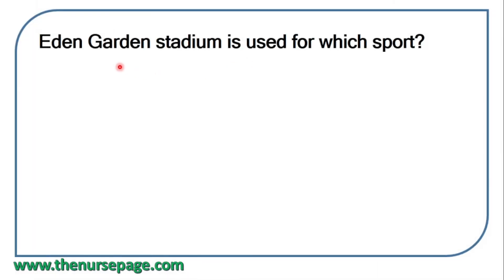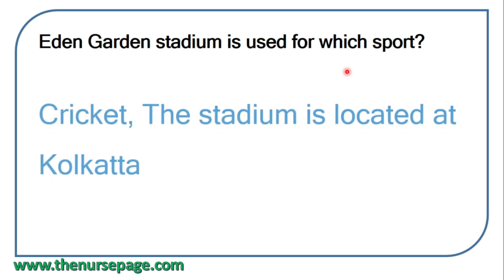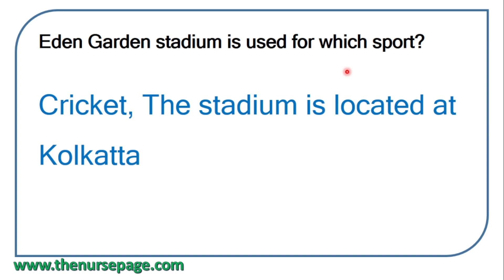Next question: Eden Gardens stadium is used for cricket. The stadium is located in Kolkata.